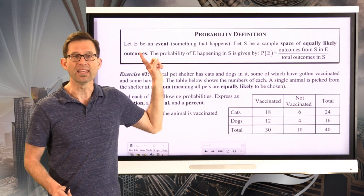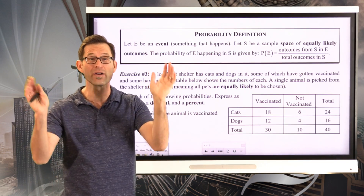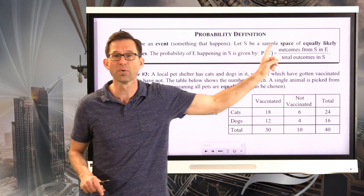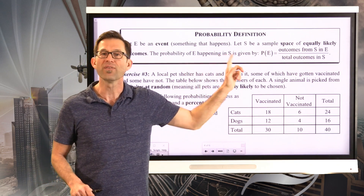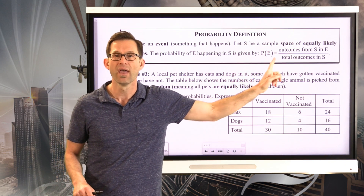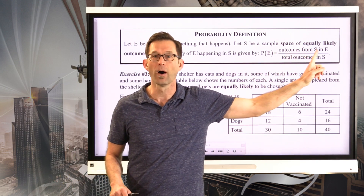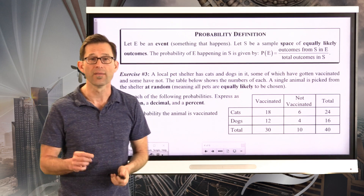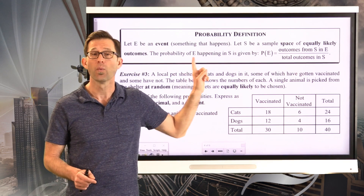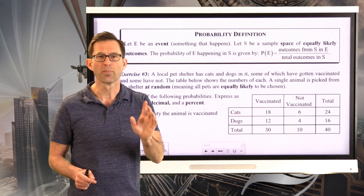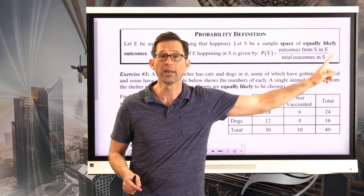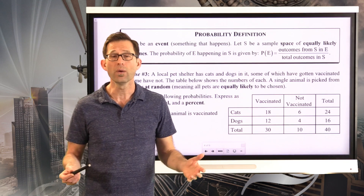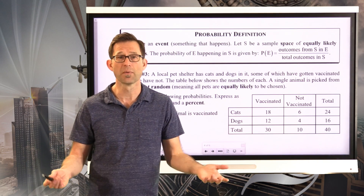The formal probability definition: let E be an event — something that happens. Let S be the sample space of equally likely outcomes. The probability of E, written P(E), equals the number of outcomes from the sample space that lie in the event, divided by the total outcomes in the sample space. In the last exercise, our event was landing on a prime number. There were 4 outcomes in that event out of 10 total, so P(prime) = 4/10 = 40%.